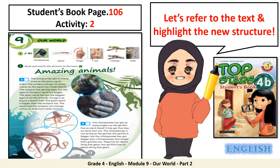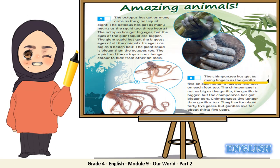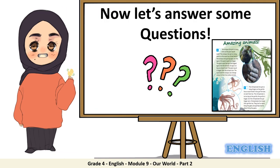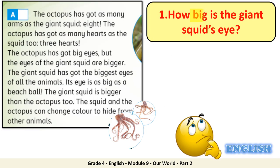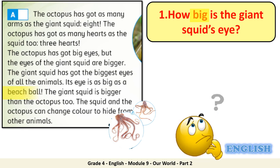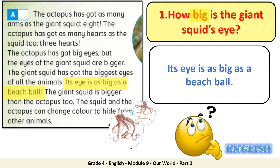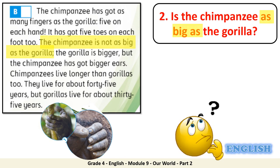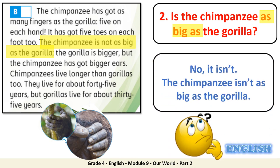Now let's refer to the text and highlight the new structure. Turn to your student's book page 106, activity number 2. Pause the video and find the new structure by yourself. Now let's answer some questions. How big is the giant squid's eye? Its eye is as big as a beach ball. Is the chimpanzee as big as the gorilla? No, it isn't. The chimpanzee isn't as big as the gorilla.